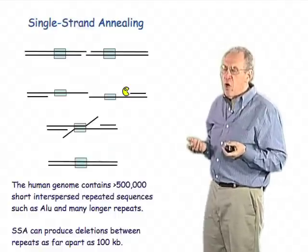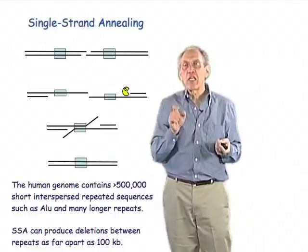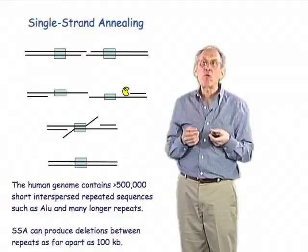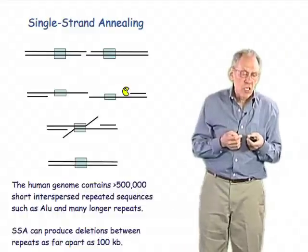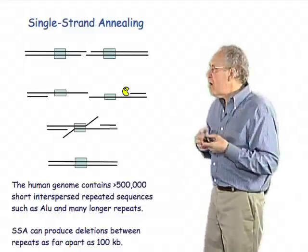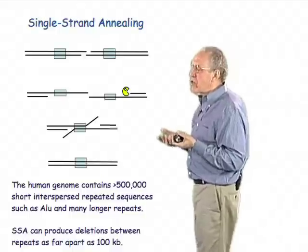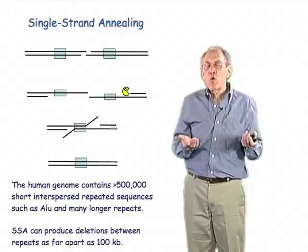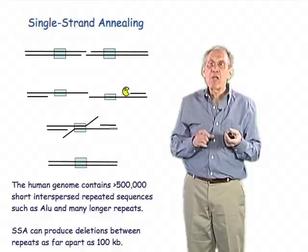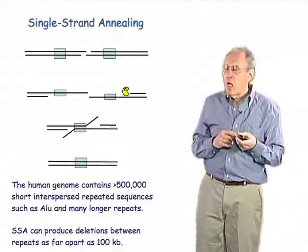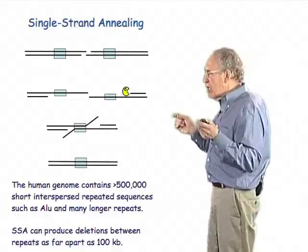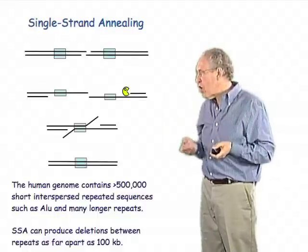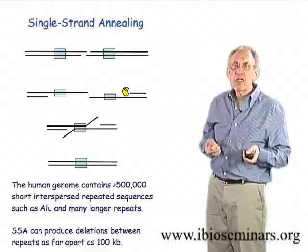In yeast, we often have to put artificially repeated sequences in places that we want to study this process because there are almost no repeated sequences in the yeast genome. But in humans, a huge part of the human genome is made up of repeated sequences. There are, for example, something on the order of 500,000 copies of a 300 base pair sequence called ALU, and these ALU sequences can serve as the termini for deletion events in between them, which are caused by this single-strand annealing process.